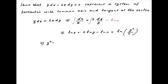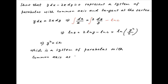Therefore x is equal to y squared upon c, or y squared is equal to c times x, which is a system of parabolas with a common axis at y is equal to 0, which is the x-axis.